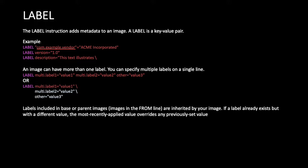The LABEL instruction is used to add metadata to an image as key-value pairs. When a Dockerfile executes to create an image, LABEL does not create a new layer in the image — it is purely metadata. For example, you can provide author information or define a software version using key-value format.